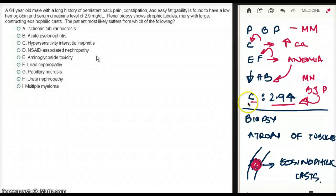Let's look at the options and see if we can come up with a reasonable answer. Choice A, ischemic tubular necrosis. This question has nothing to do with ischemic tubular necrosis, so that's not a possible answer. Acute pyelonephritis. With pyelonephritis, instead of eosinophilic casts, we're going to see red blood cell casts.